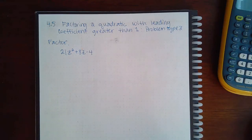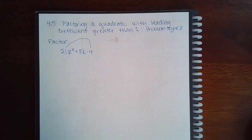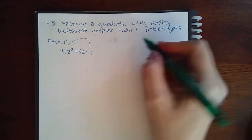And here we have problem type 3 with factoring a quadratic with the leading coefficient. So 21 times 4, I do not know what that is... 84, yes, 84.